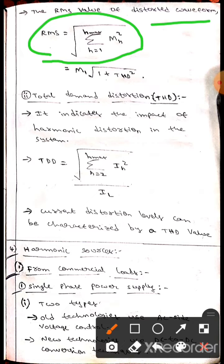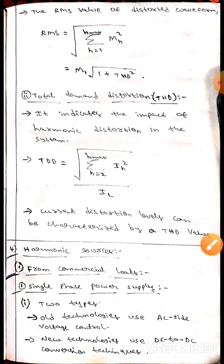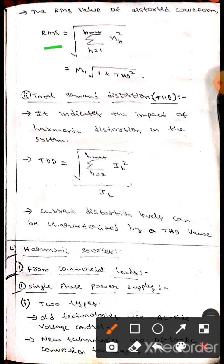The relation between RMS and THD is RMS equals M1 times root over one plus THD square.